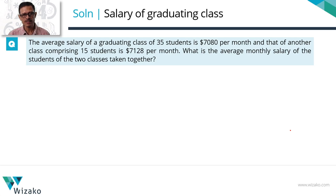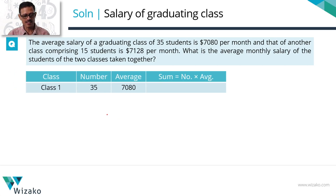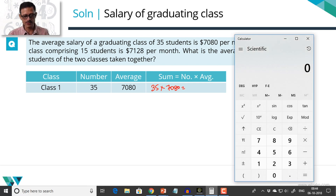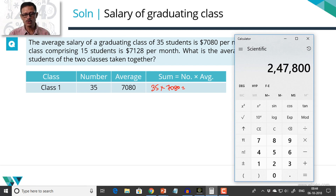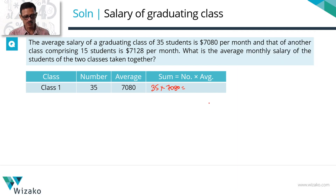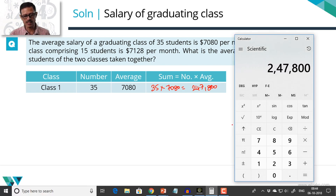Let's go with the standard framework and start filling in the data. First class: 35 students, average salary equals $7080. Sum of their salaries is equal to 35 × $7080. Let's compute this value with a calculator: 35 × 7080 works out to 247,800. Let's note that down — 247,800. Quickly check it — yes, that's absolutely right.